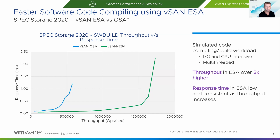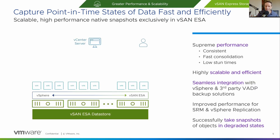Yeah, I mean keeping the response time or the latency so low this far out on the curve is a really nice improvement. And I actually liked the fact that this was using the SPEC Storage 2020 simulation because running software code compiling is extremely resource intensive, and you're using compilers that are oftentimes multi-threaded and can use every bit of processing power given to them. So this is such a great example. One other element that also provides so much effective improvement for our customers is a brand new native scalable snapshot engine that we have in the Express Storage Architecture.